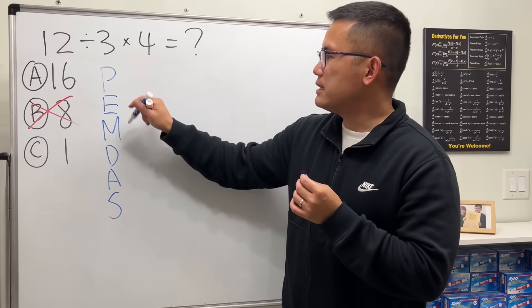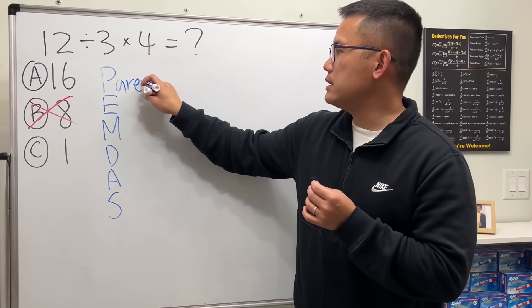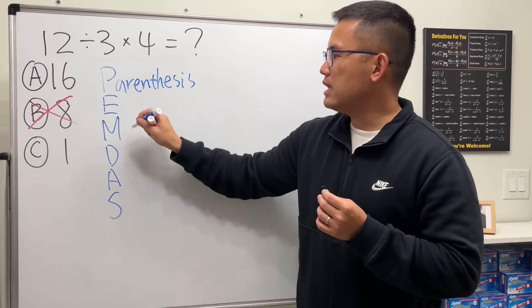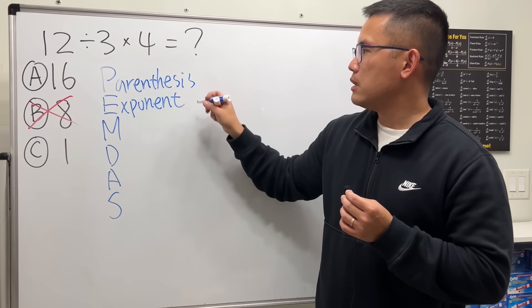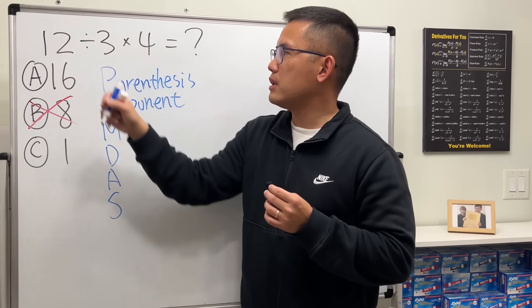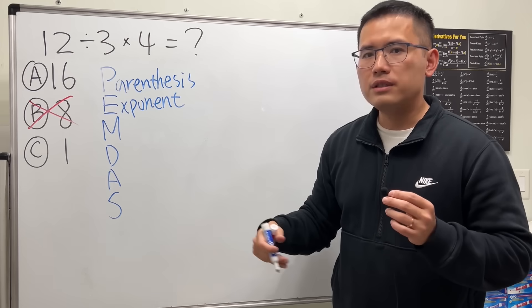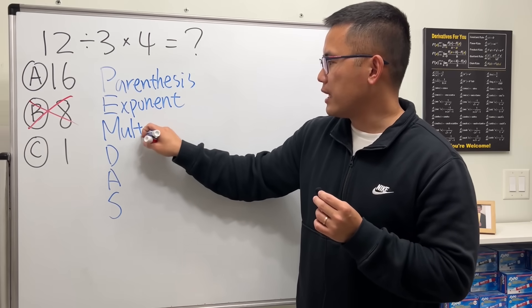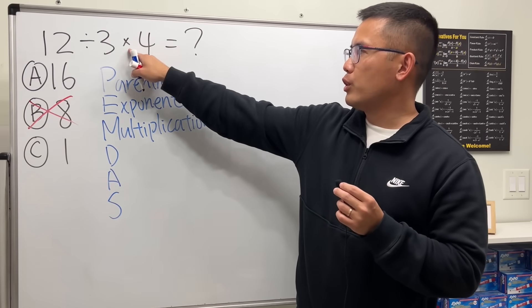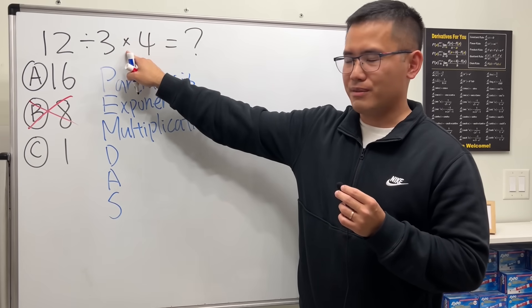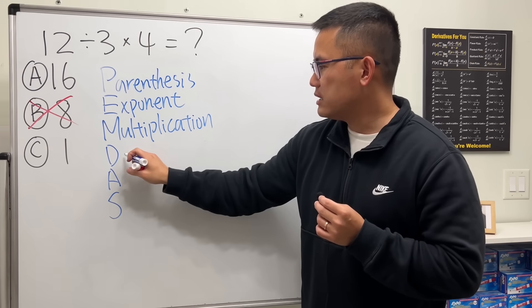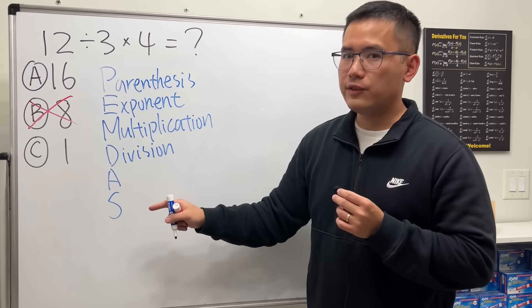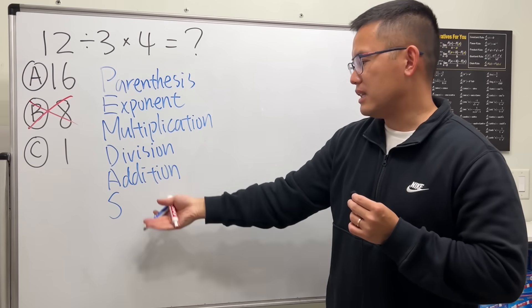P stands for parentheses, but we don't have any parentheses so we can skip that. E stands for exponent, but we don't have any little numbers here, so no exponents, we'll skip that. M stands for multiplication and we do have a multiplication symbol here, so keep that in mind. Next we have D stands for division and we have this division here.